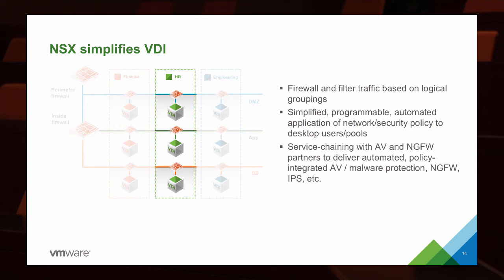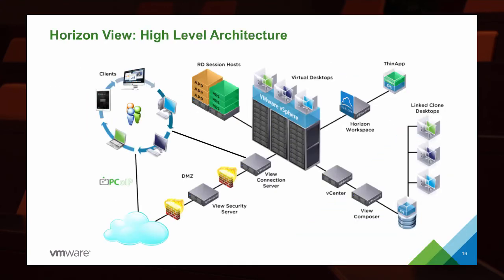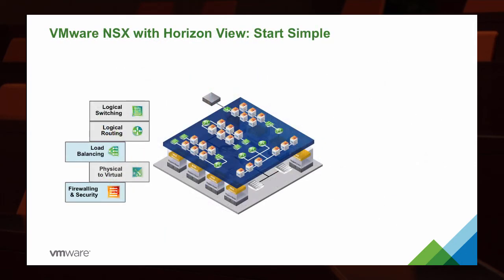So how do we put together NSX and Horizon View? Looking at a high-level architecture of Horizon View, we have our connection servers, security servers, View Composer, and possibly RDS hosts. We're going to focus on the desktop portion — the security, connection, and Composer servers. We start simple by leveraging logical switching, logical routing, and any physical-to-virtual connections we may need, protecting VMs from each other, individual pools, the way pools communicate with physical resources, and routing between server and virtual desktop plane resources.